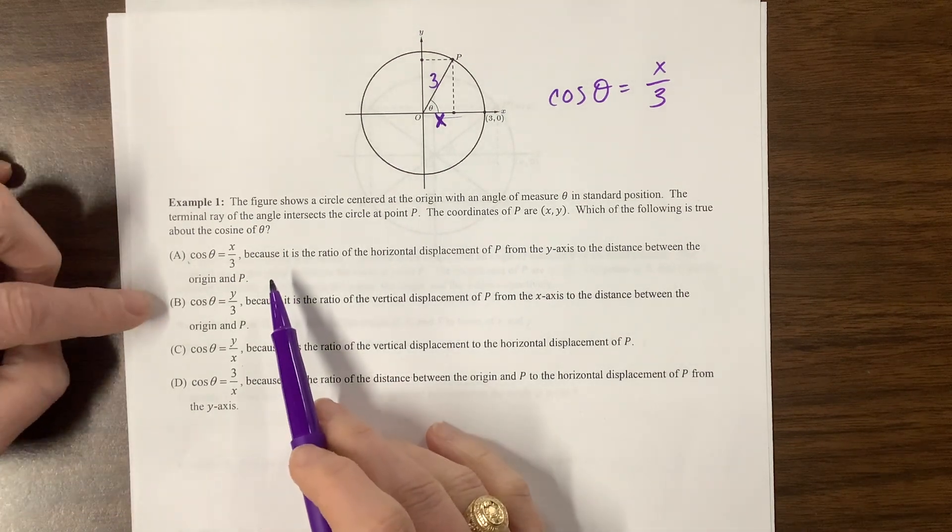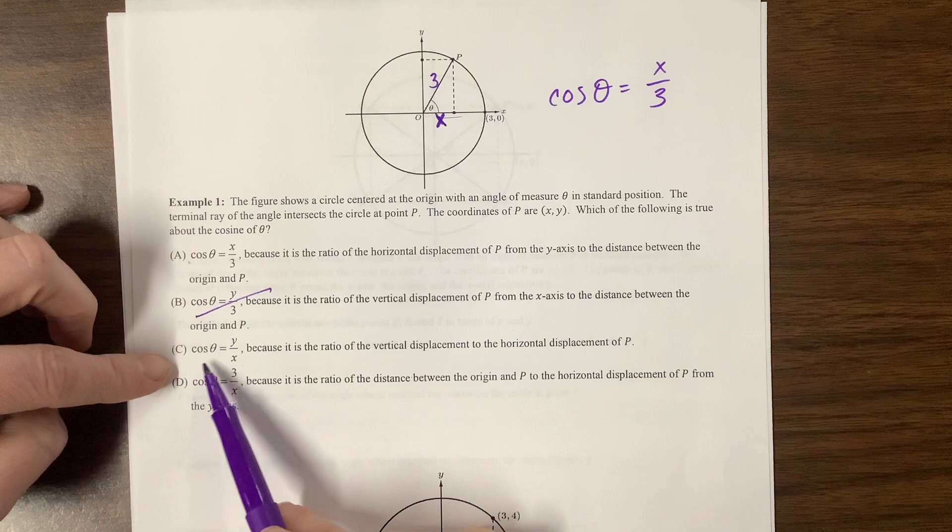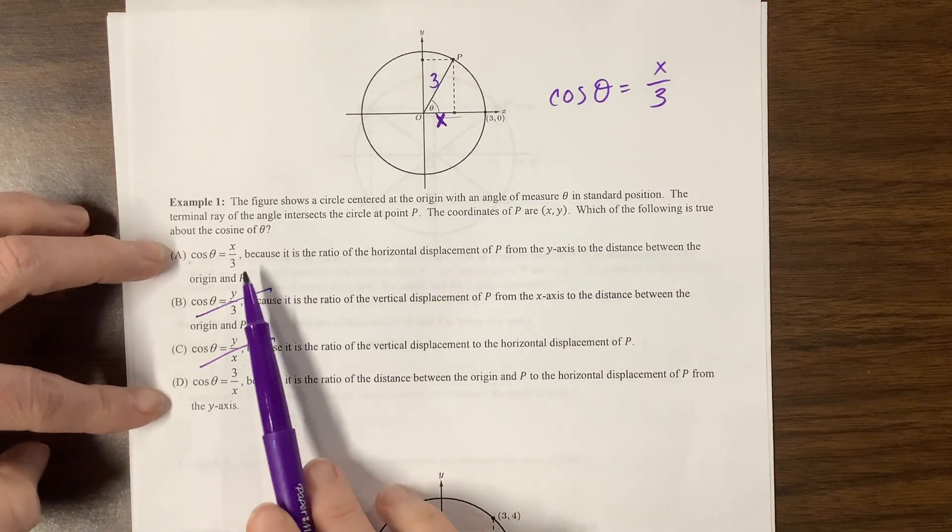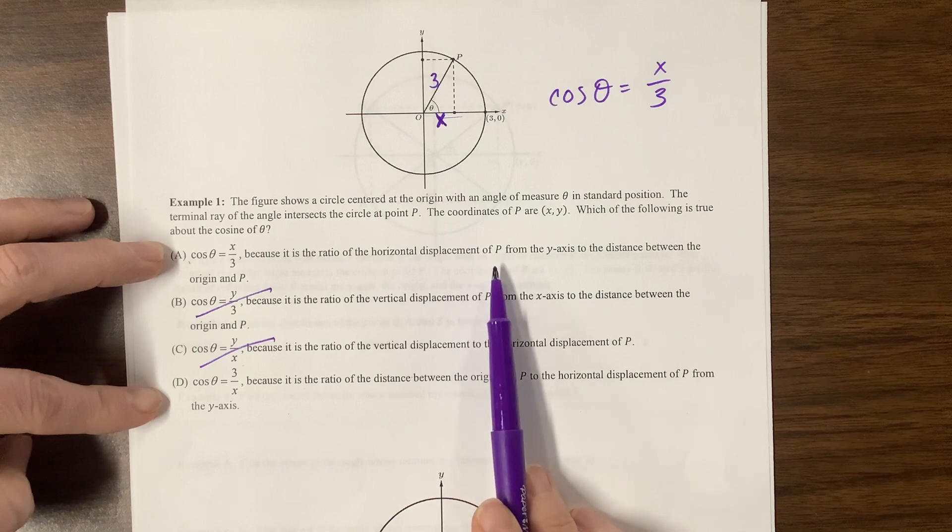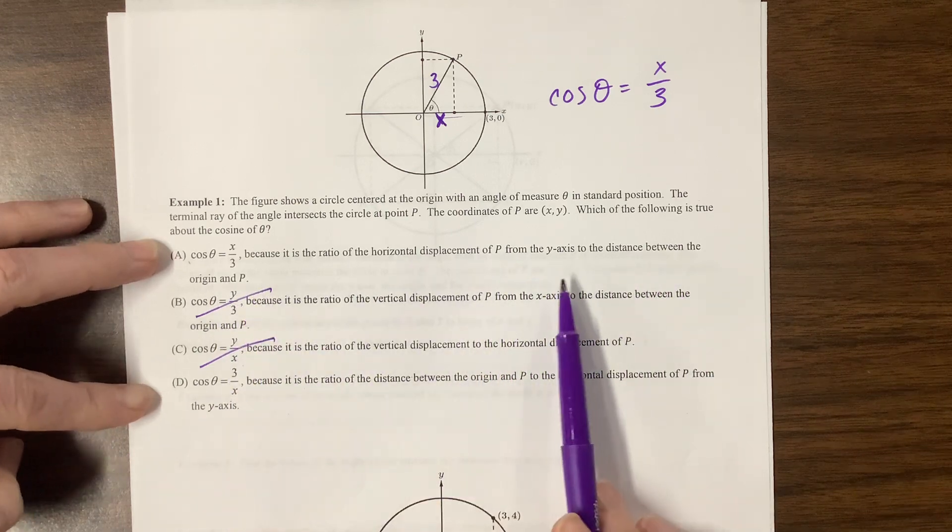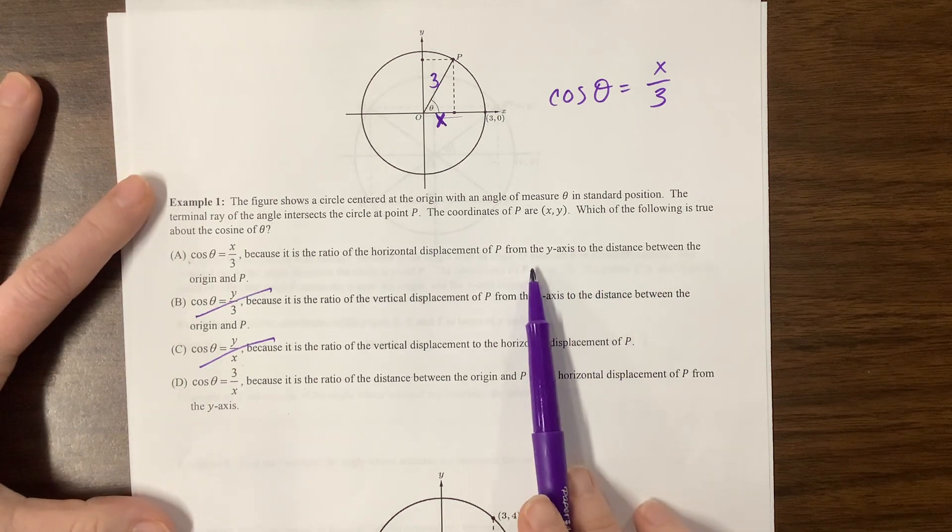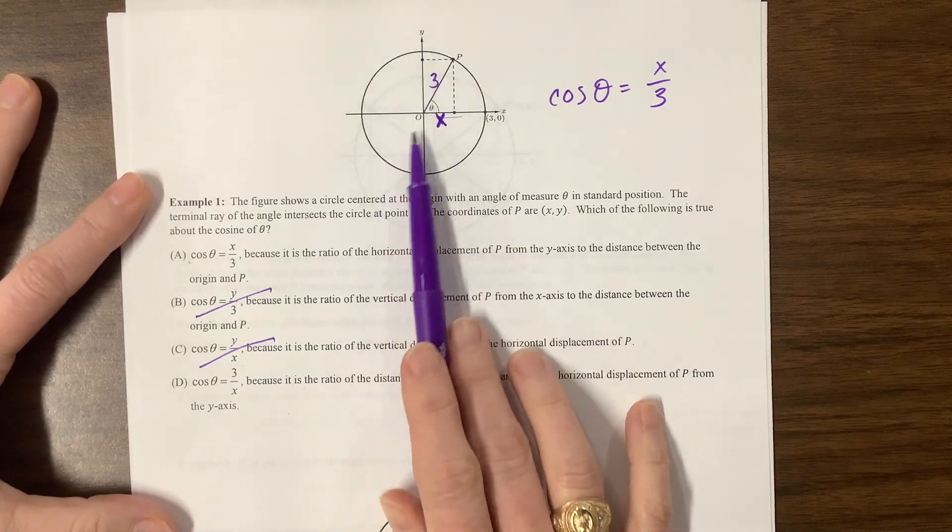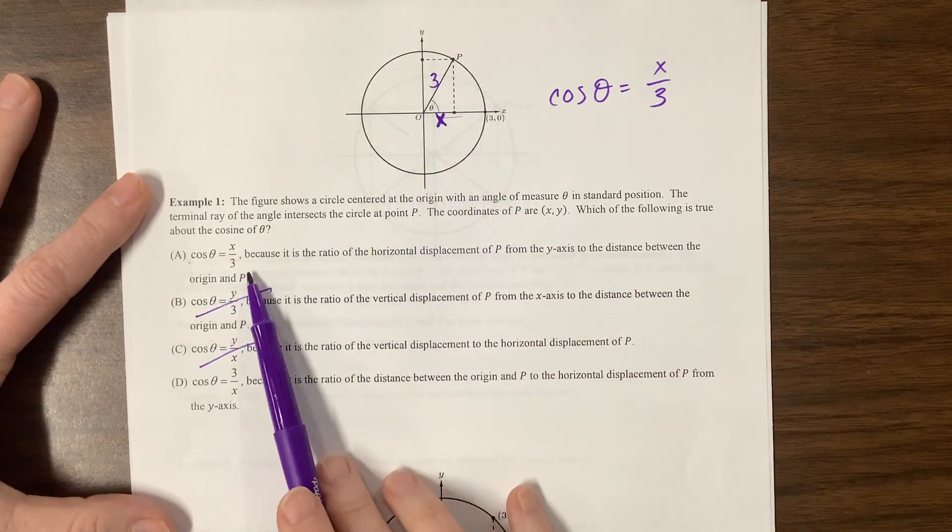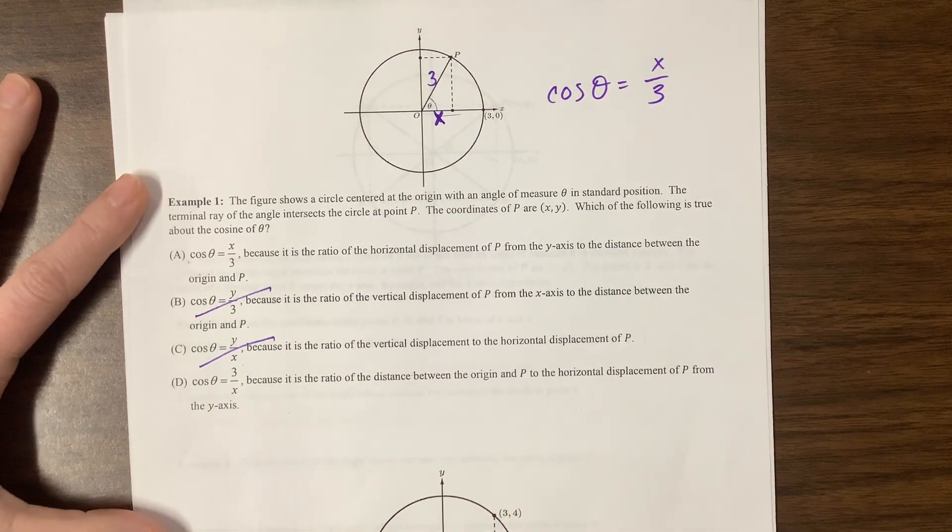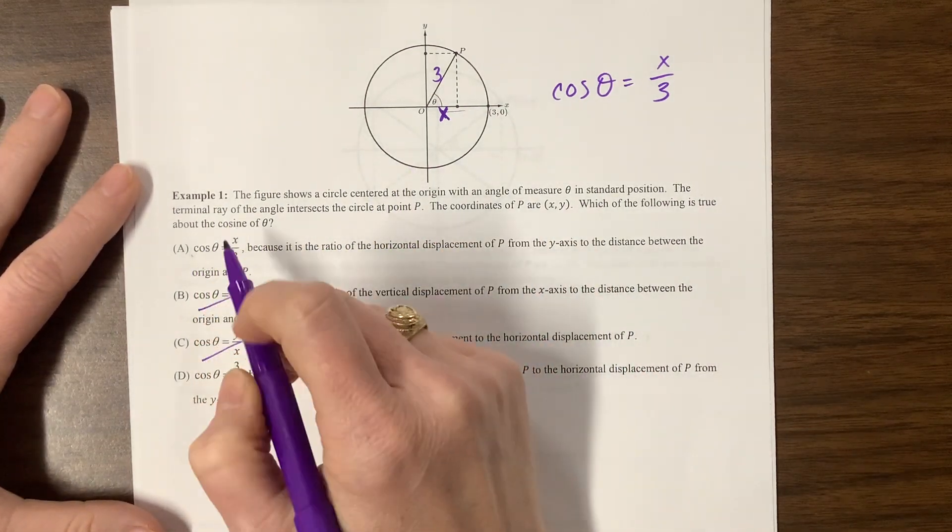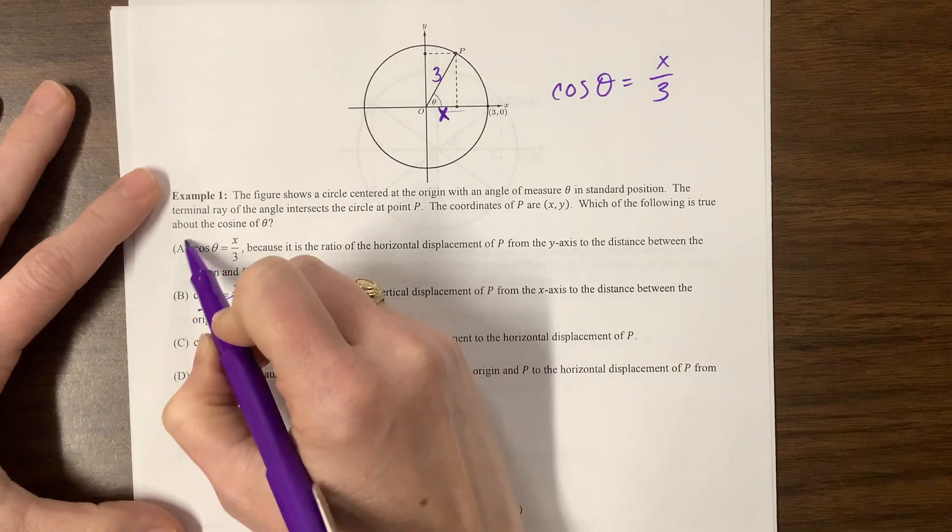So this would be 3. So we can say cosine of theta is adjacent over hypotenuse. It's x over 3. So cosine is not going to be y. It's not going to be y, so it's one of these two. x over 3, what does the rest of it say? Because the ratio of the horizontal displacement of P from the y-axis is the distance from the origin of P. That is a tricky way to say it, but yes, displacement from the y-axis. Here's the y-axis. The displacement from is this, and the origin in P. Origin in P is the radius of the circle. So they picked a tricky way to say that, but AP likes to do that.